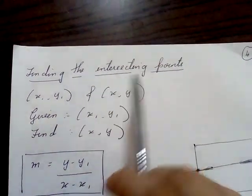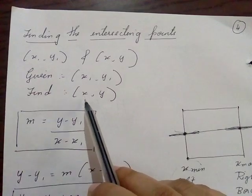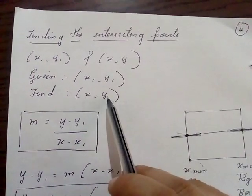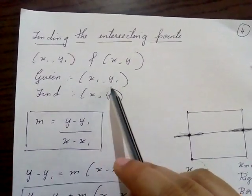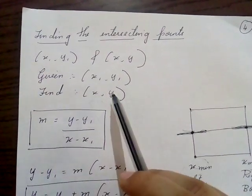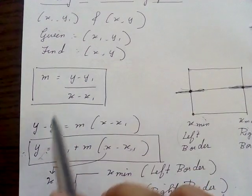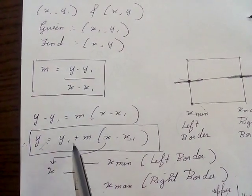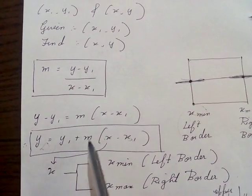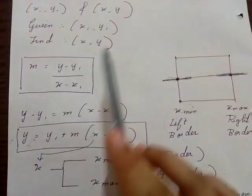Here we will see formulas to find the intersection points. Given coordinates x1, y1, we have to find x, y — the intersection points. Based on these points we find the slope: m = (y - y1) / (x - x1). Rearranging, we get y - y1 = m(x - x1), so y = y1 + m(x - x1). This formula is used for finding the y-coordinate of the intersection point.